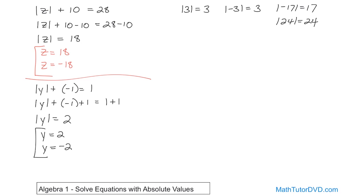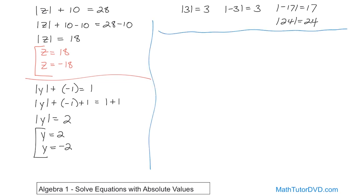In all previous equations we've had, there's only been one value of the solution. But when you have an absolute value, you actually have two solutions that work. Sometimes in algebra you're going to get more than one solution to a problem — you have to get used to that idea. Let's do one last problem to illustrate: negative absolute value of x plus 2, close parentheses, is equal to negative 6.